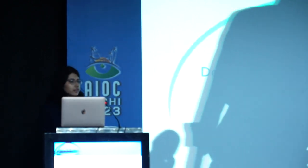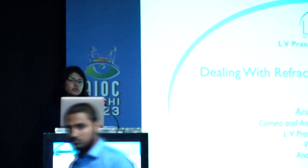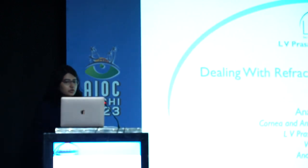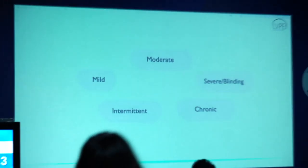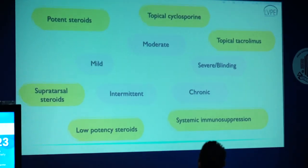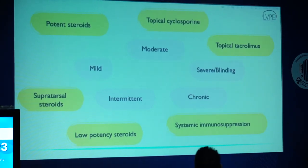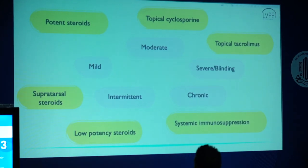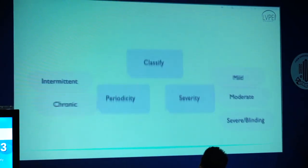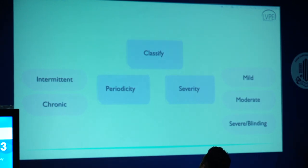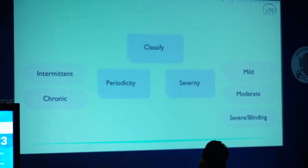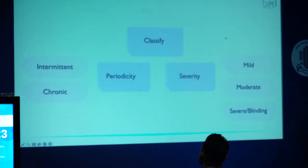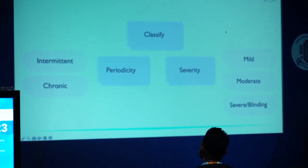Good afternoon everyone. I will be talking about management of ocular allergy. Ocular allergy can present in different ways, and there are several therapeutic modalities available. Despite this, we still see a subset of patients who won't respond the way we want, or they end up with complications. An important reason is that these patients are not correctly classified — this leads to either undertreatment or overtreatment. For example, a patient with intermittent mild disease may get repeated courses of steroids and develop complications, while a patient with chronic disease may not get adequate therapy and have frequent relapses.